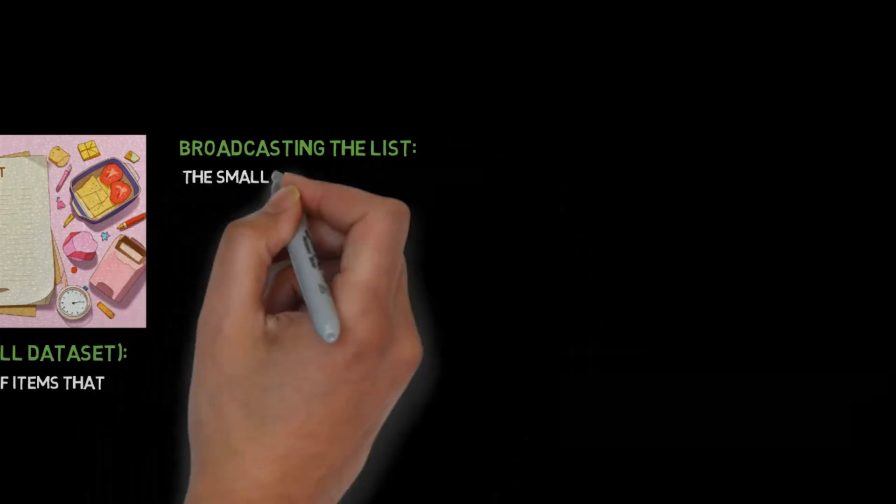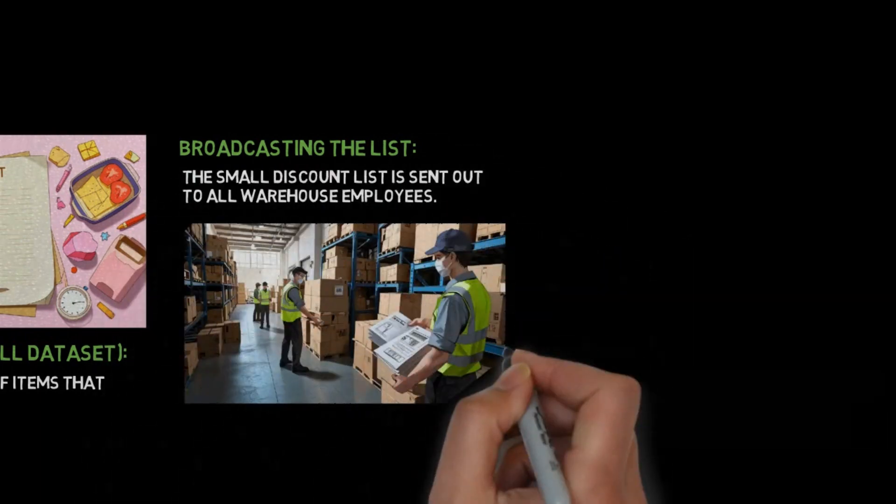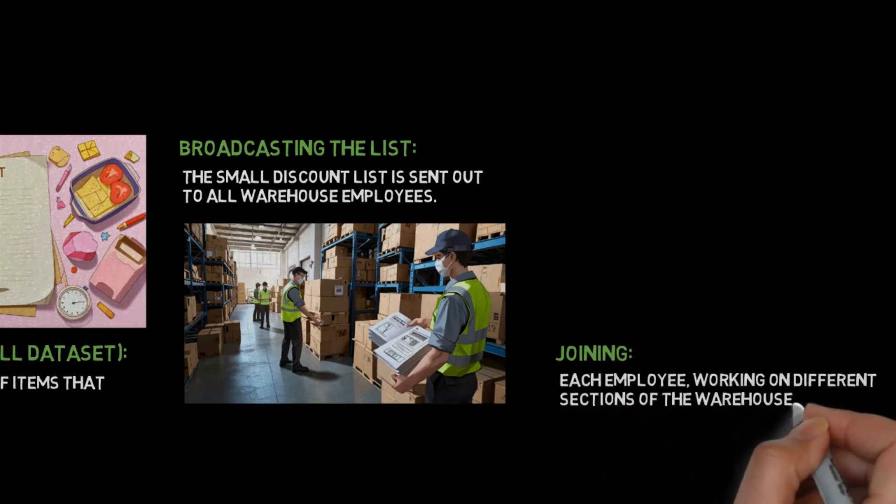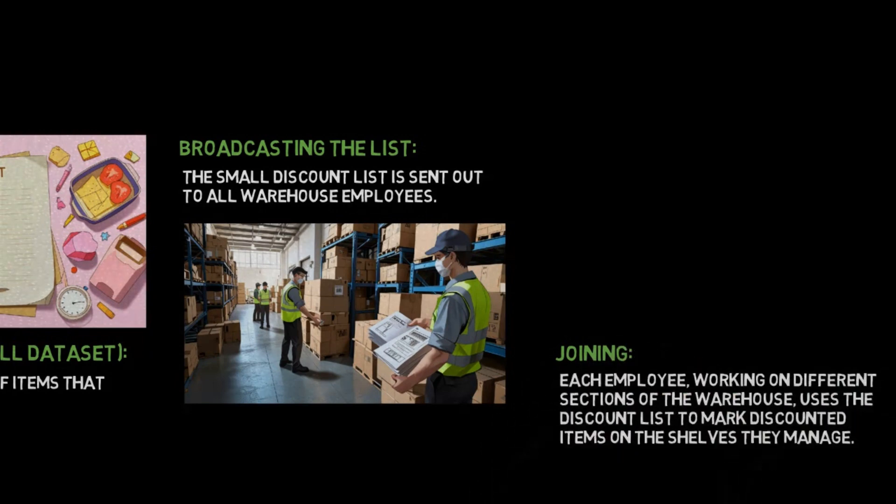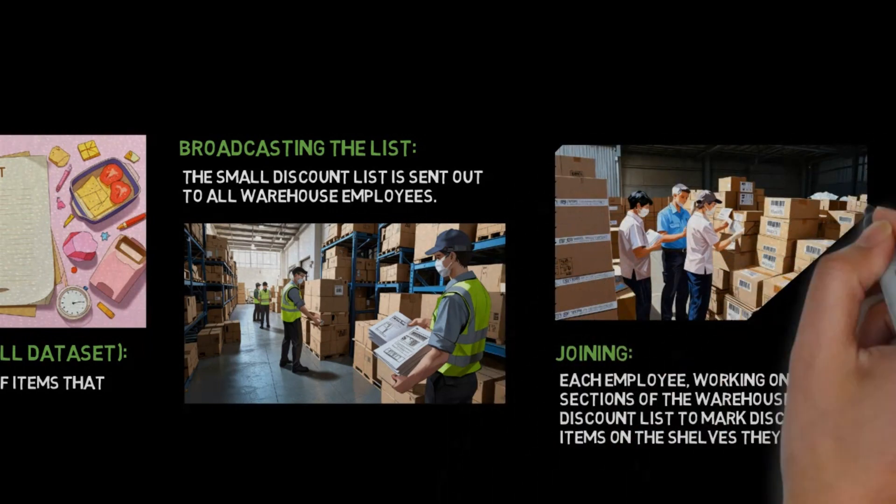Broadcasting the list: The small discount list is sent out to all warehouse employees. Joining: Each employee working on different sections of the warehouse uses the discount list to mark discounted items on the shelves they manage.